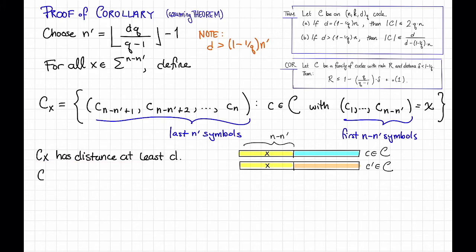So that shows that c sub x has distance at least d. Also, let's observe that c sub x has length n' prime, which as noted before, is at most d divided by 1 minus 1 over q.